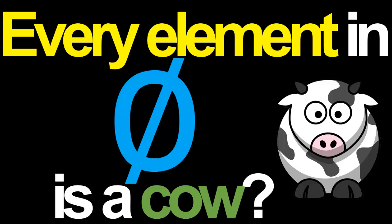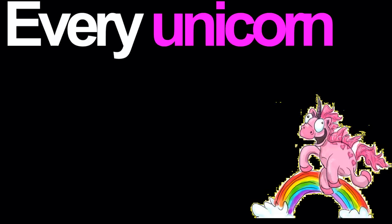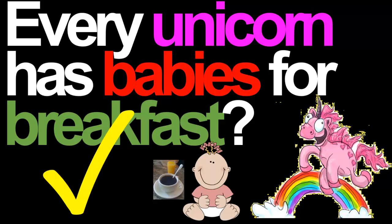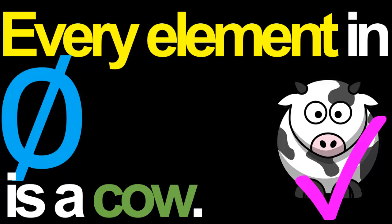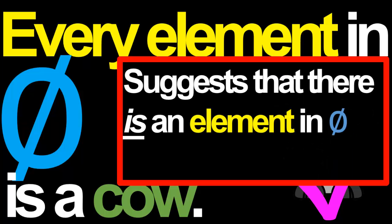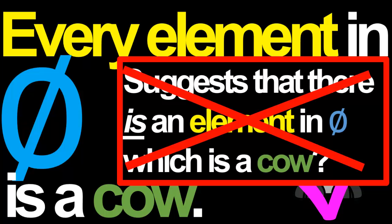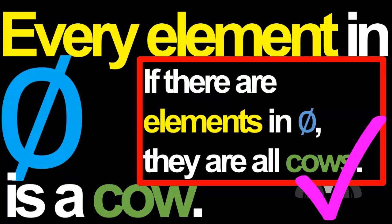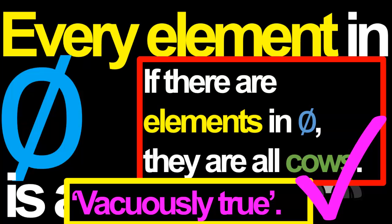Consider the following true-false question: every element in the empty set is a cow. It turns out that this is actually true. In ordinary natural language, when we make such a statement, we seem to be suggesting that there is an actual element in the empty set which is a cow. However, this is not what the statement says at all. Instead, it says: if there are any elements in the empty set, then these elements are all cows. This statement is vacuously true — it is impossible for us to contradict it. There is no way to find any element in the empty set which is not a cow. Therefore, this statement is vacuously true.